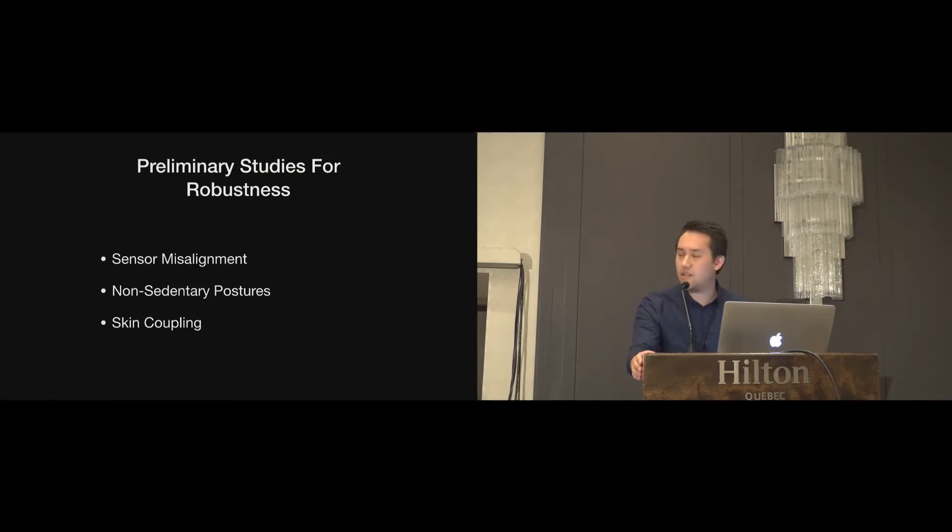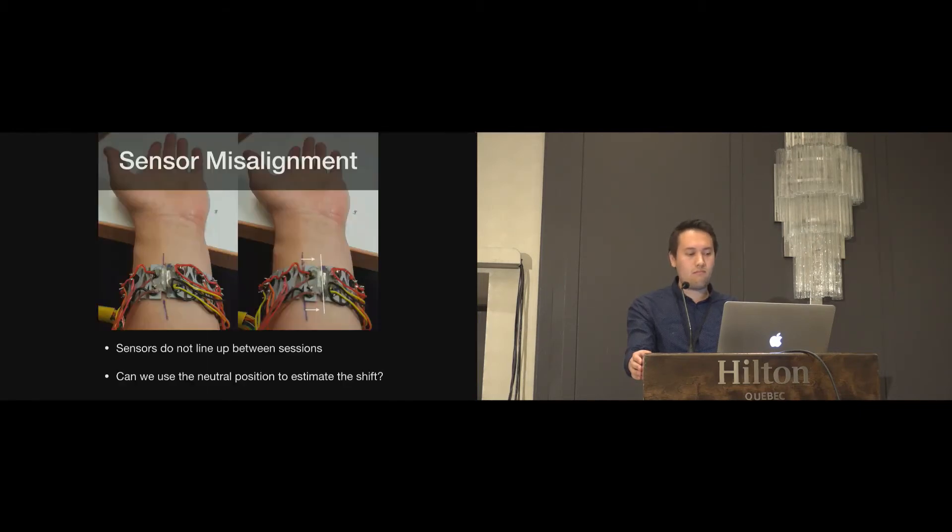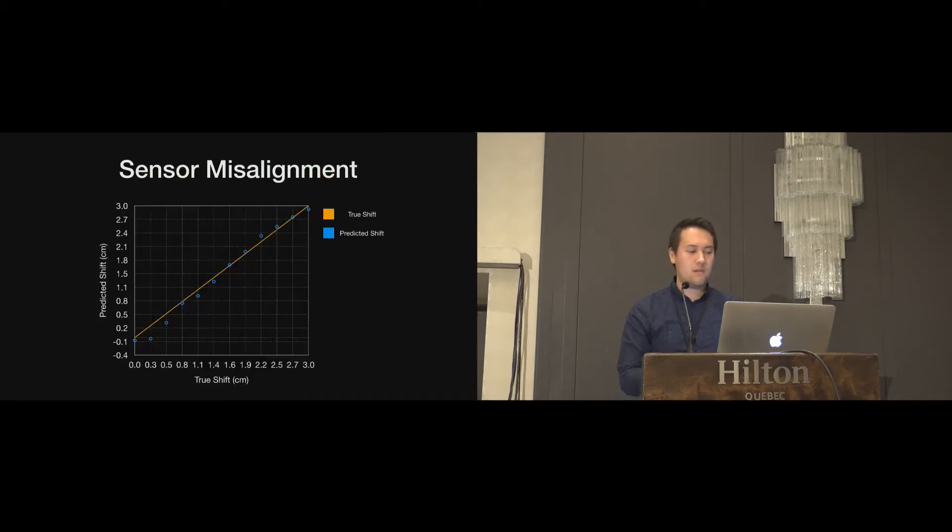In addition to this study, we did some additional preliminary studies to investigate the effects of cross-session misalignment, non-sedentary postures, and skin coupling. Sensor misalignment occurs when the device is taken off and back on between sessions. This can lead to a classification error due to a shift in the features. So detecting this misalignment is a first step towards calibrating the device to account for the shift. We tried using a neural network regressor on the data from the neutral hand pose, and we found that we could detect the shift reasonably well.